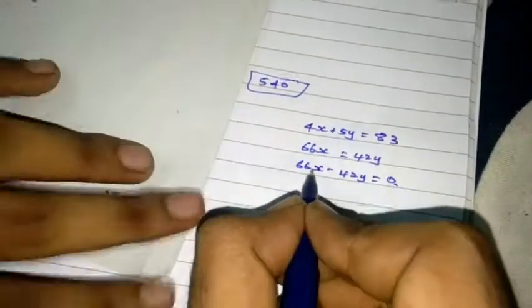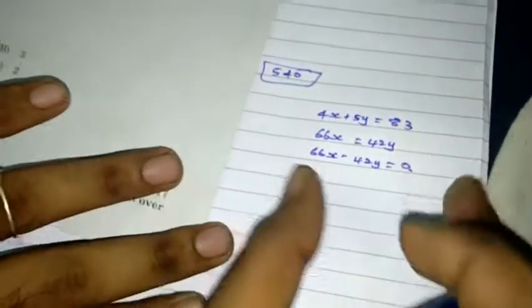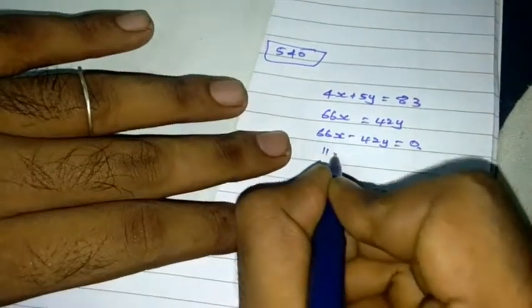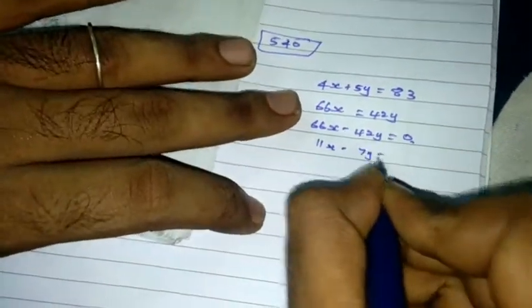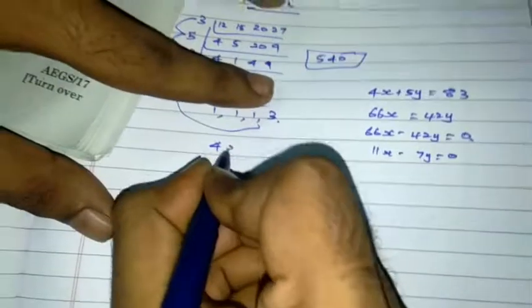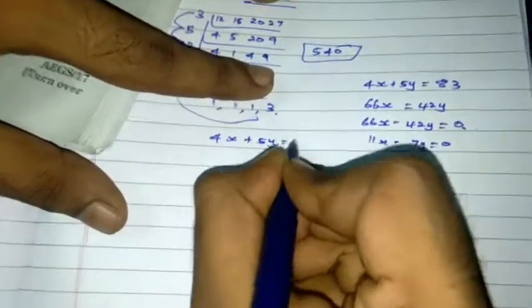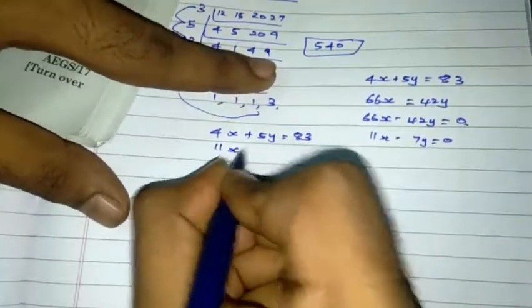Now, we can divide by 6. Let's solve the equation. So, 6th table. So, 11X minus 7Y equals 0. Here, the equation. 4X plus 5Y equals 83. 11X minus 7Y equals 0.